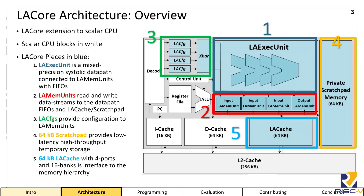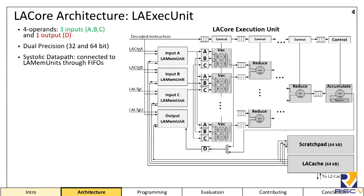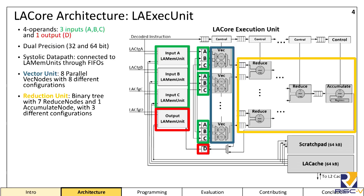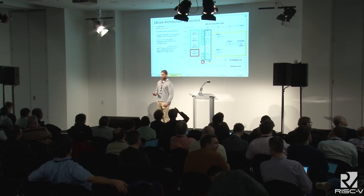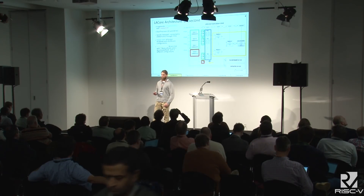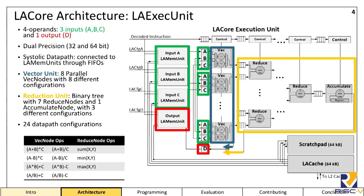The LA cache services most of the requests through the execution unit to the main memory. The LA exec unit is highly configurable, dual precision, with a systolic data path, and it has input and output FIFOs to the LA mem units. There are three input data streams, shown in green and labeled A, B, and C, and an output data stream shown in red and labeled D. The actual data path is composed of a vector unit shown in purple and a reduction unit shown in yellow. The vector unit takes three input vectors and produces an output vector, while the reduction unit takes two input vectors and produces a scalar output. The output of the data path can be configured to either take the vector output or the scalar output, providing reduction capabilities as well as vector outputs. Overall, the whole data path can be configured for 24 different operations on the inputs.